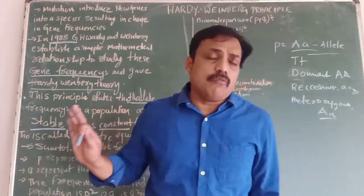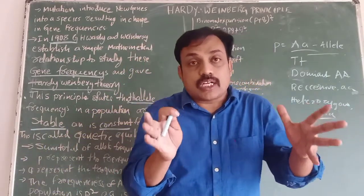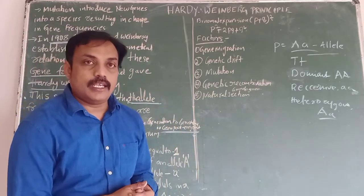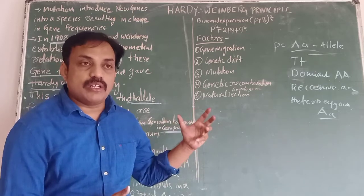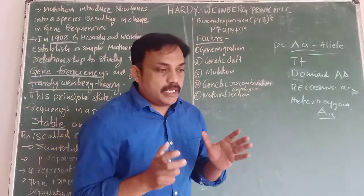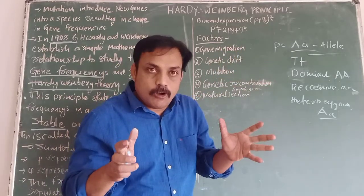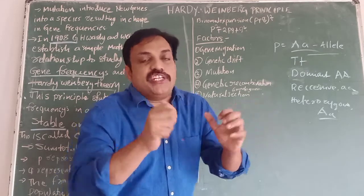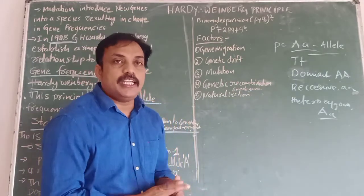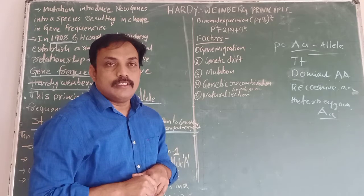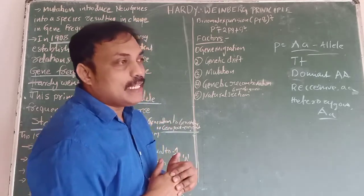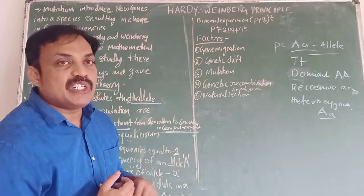This means equal number of chromosomes, equal number of genes. The structure of the gene, structure of DNA — everything remains constant as per Hardy-Weinberg. In natural conditions, in naturally breeding organisms in a particular population, allele frequencies always remain constant generation to generation. They described this equilibrium — the Hardy-Weinberg principle — using one mathematical theorem.